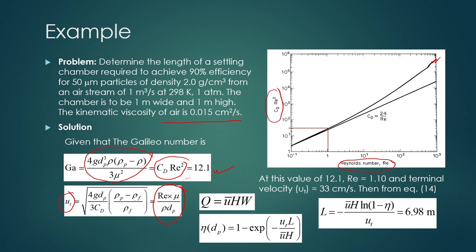The C_d*Re² value changes with Reynolds number. At a Galileo number value giving C_d*Re² = 12.1, from the graph the Reynolds number is approximately 1.10. From this Reynolds number, the terminal velocity is calculated to be 33 cm/s. Then from equation 14, the length of the chamber is calculated.